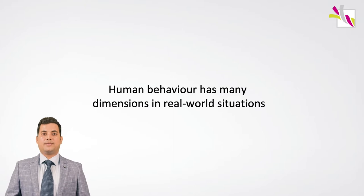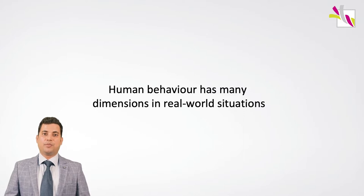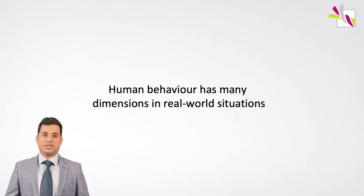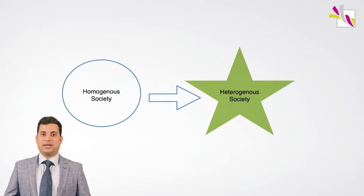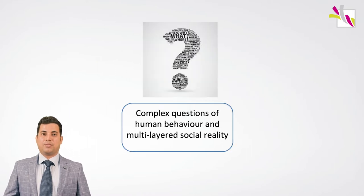However, it is sometimes difficult to understand real world situations and human behaviors from a single disciplinary lens. This is more prominent in social science disciplines, wherein society, economy, polity and humans are used as laboratories, which are dynamic in nature. We have to agree that over time society has transformed from homogeneity to heterogeneity. It becomes difficult to address complex questions of human behavior and multi-layered social reality through a single disciplinary lens.